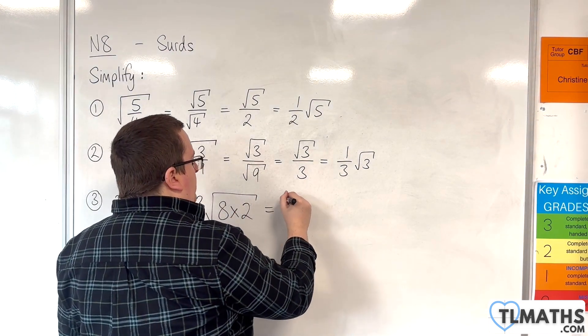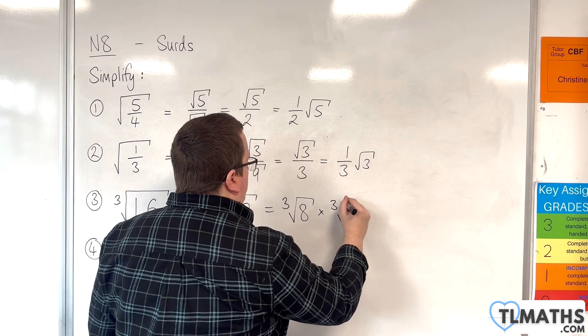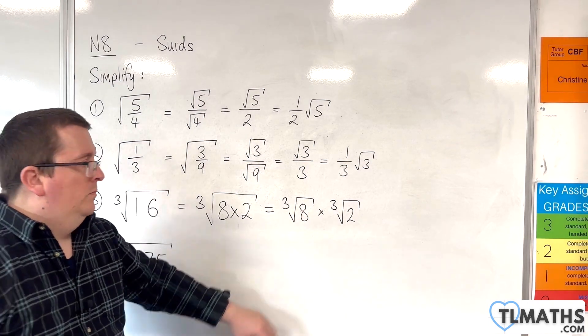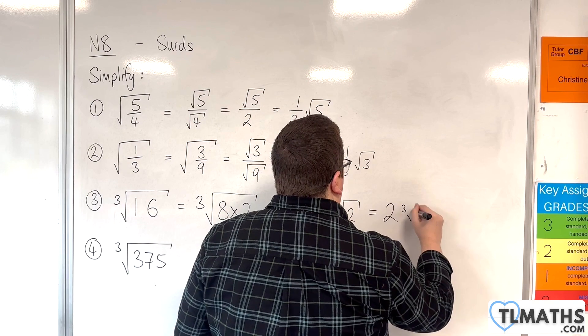And, then write that as the cube root of 8 times the cube root of 2. Now, the cube root of 8 we know as 2. And, so, we can write that as 2 cube root of 2.